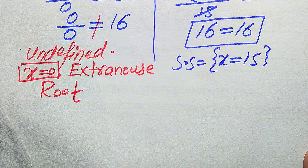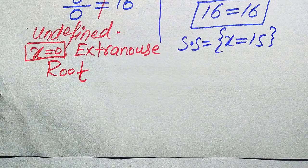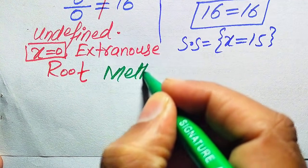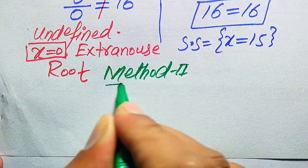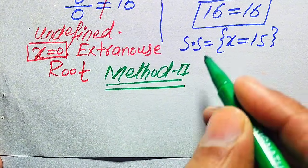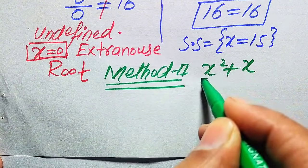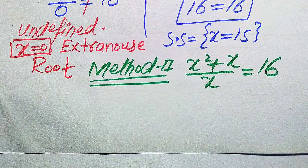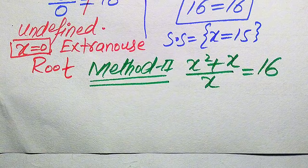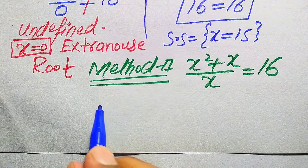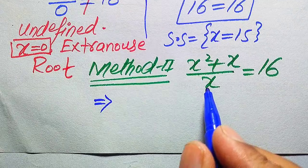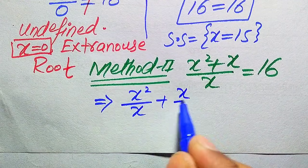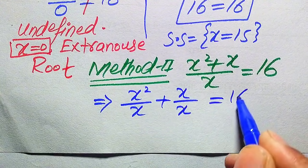The solution set of this question is x equals 15 — the only solution. Now we solve the problem using the second method. We copy down the original equation: x squared plus x, divided by x, equals 16. Here we use a different technique and break the fraction.